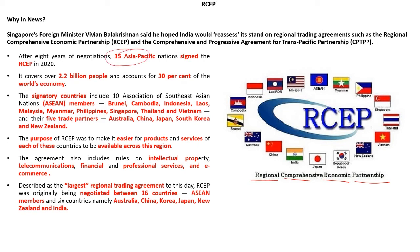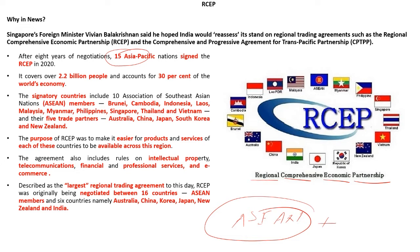The RCEP nations include ASEAN members plus five trade partners. The ASEAN members are Brunei, Cambodia, Indonesia, Laos, Malaysia, Myanmar, Philippines, Singapore, Thailand, and Vietnam. The five trade partners are Australia, China, Japan, South Korea, and New Zealand.